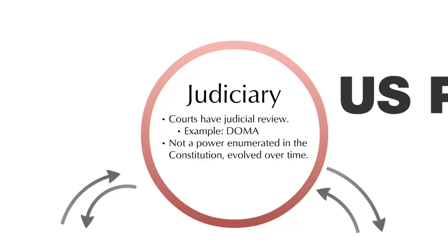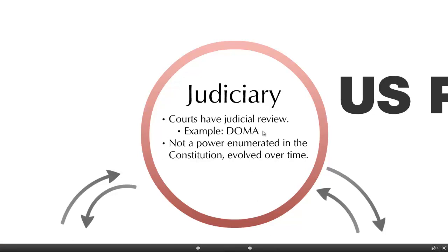Note that the decision to enact DOMA, the Defense of Marriage Act in California, was done through a popular referendum. Those who defend DOMA say the Supreme Court is overriding a democratically taken decision — and they're absolutely right. That's exactly what the Supreme Court can do: it can say that even a decision arrived at through democratic voting is unacceptable if it contradicts the Constitution. Interestingly, this power of judicial review was not enumerated in the Constitution but evolved over time.